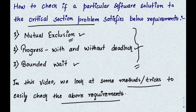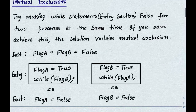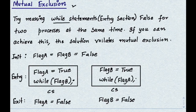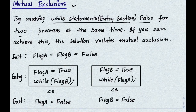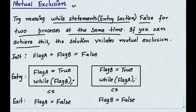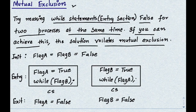Let's first go into mutual exclusion — how to check if a software solution satisfies it or not. The method or trick here is: try making the while statements in the entry section false for two processes A and B at the same time. If you can make them both false at the same time, the solution definitely violates the mutual exclusion principle.